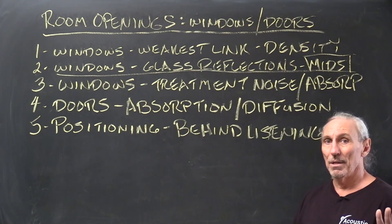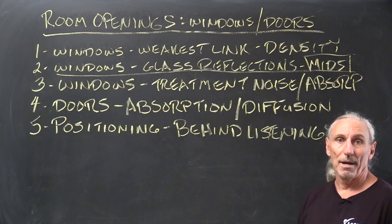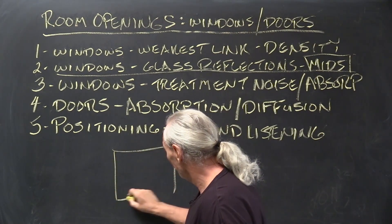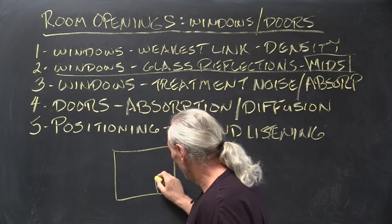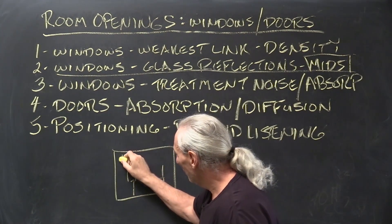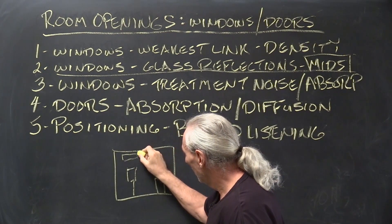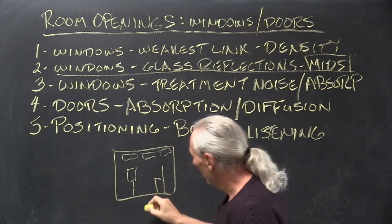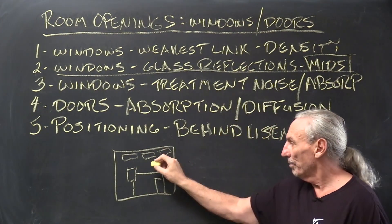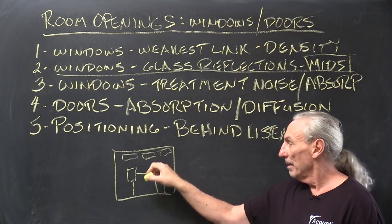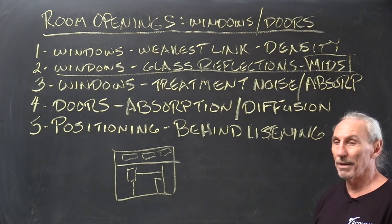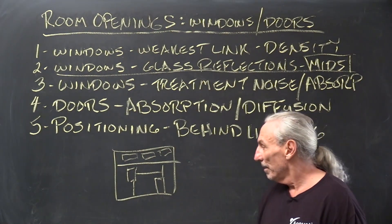Glass really destroys mid-range frequencies, so we don't want glass in any rooms at all. I'm almost getting to the point where I don't want to design rooms that have glass in them. If the client has requirements for glass, we can do it, but here's what we do: if this is our listening position and here are our speakers, we get the windows up high — above everything — so they're not in our sound field, not in our domain of listening. We get the natural light, but they're not impacting the horizontal sound field.